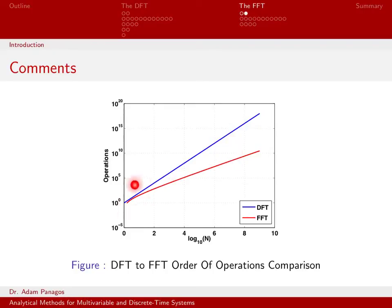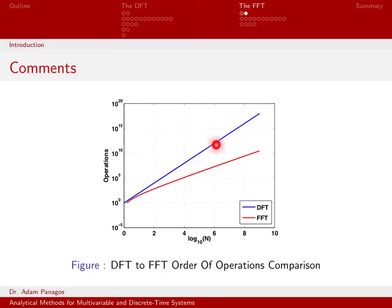For small values of N — short signals around 100 samples where log N equals 2 — the difference in number of operations between the DFT and the FFT is not very significant; there's a small gap. However, by the time we reach log N equals 6, signals of length one million, the difference becomes very significant. The FFT requires around 10 to the 7 operations, whereas the DFT requires 10 to the 12 — that's 5 orders of magnitude difference.